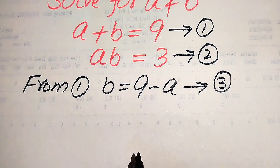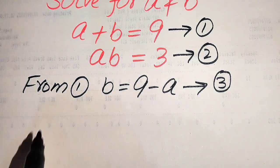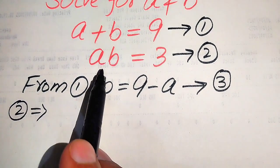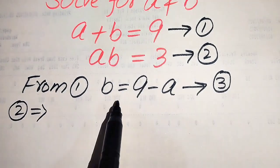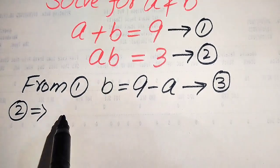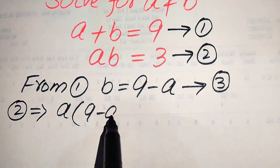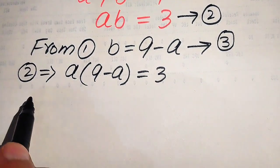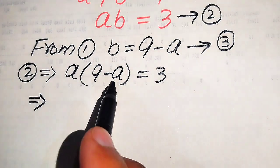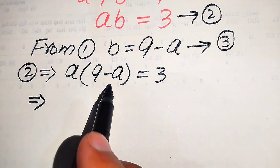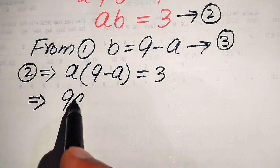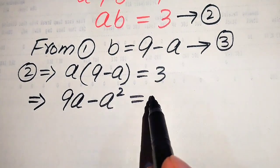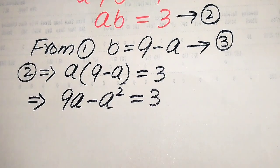To find the values of a and b, we use equation number 3 in equation number 2. Equation number 2 gives ab equals to 3. Substituting b equals to 9 minus a, it becomes a(9 minus a) equals to 3. Expanding: 9a minus a squared equals to 3.